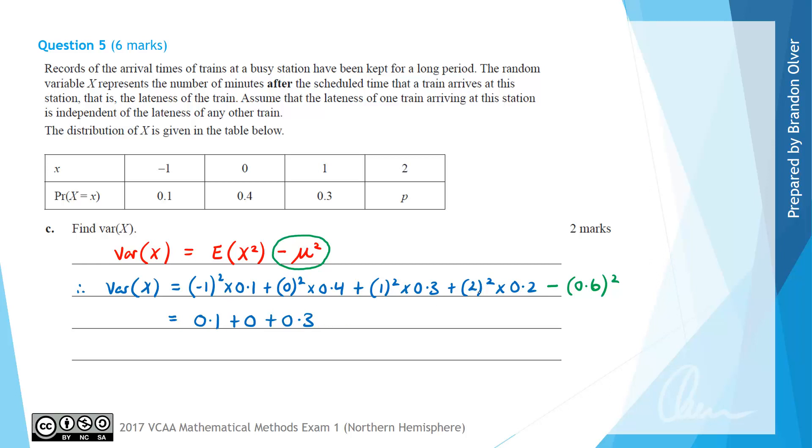And then 2 squared is 4 times 0.2 is going to add on 0.8. And then we still need to subtract away 0.6 squared, which as a decimal is 0.36.